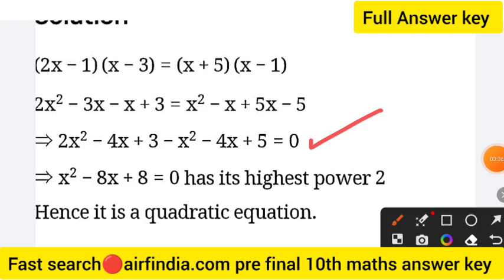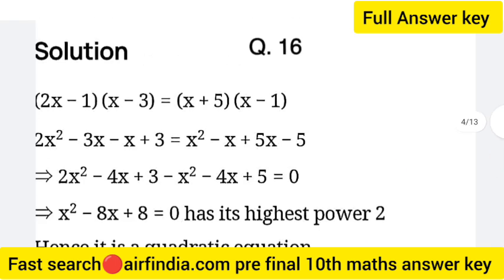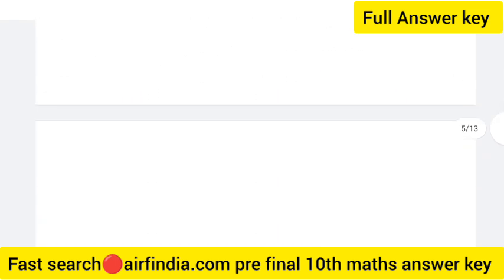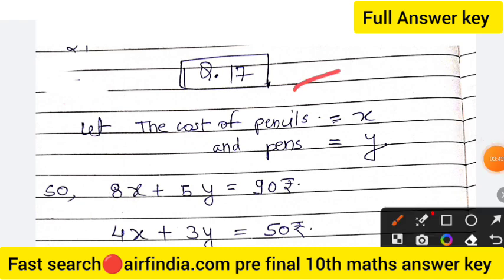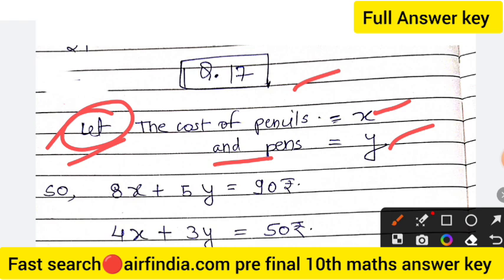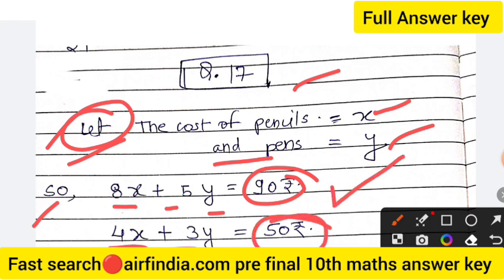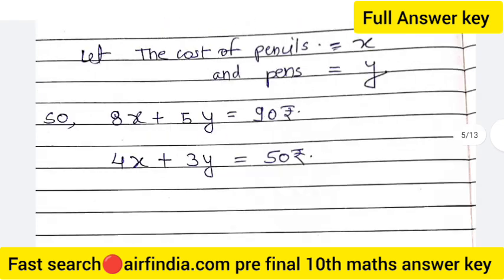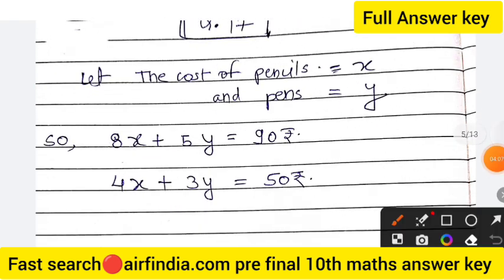Question 17: make a linear equation. Let the cost of one item be x and the cost of another be y. The first equation is x plus 5y equals 90 and the second equation is 4x plus 3y equals 50. These are given as a system of linear equations. This is the right answer.